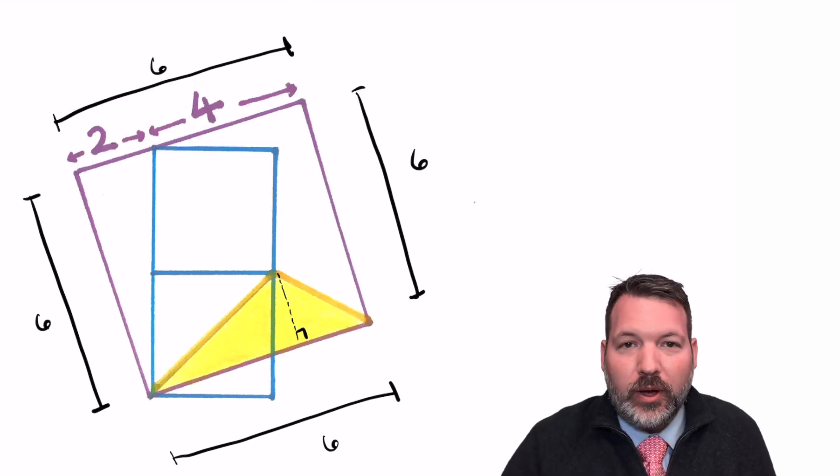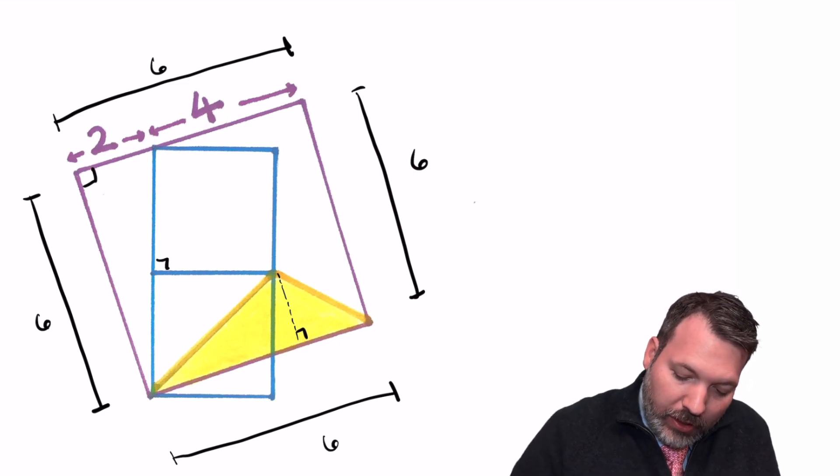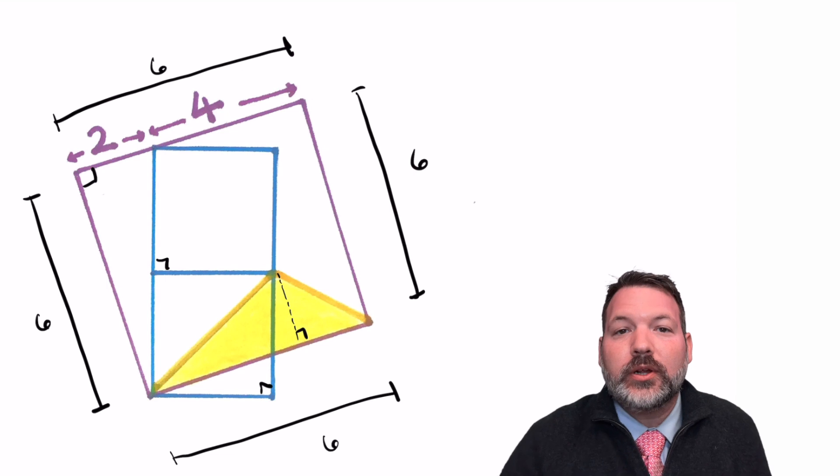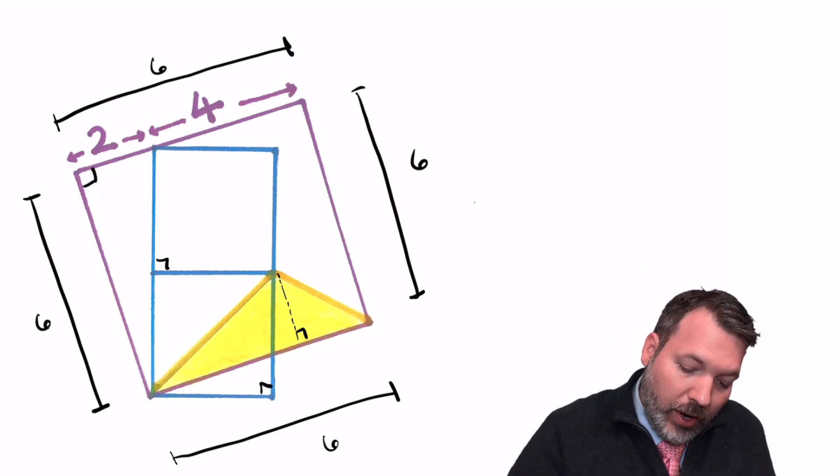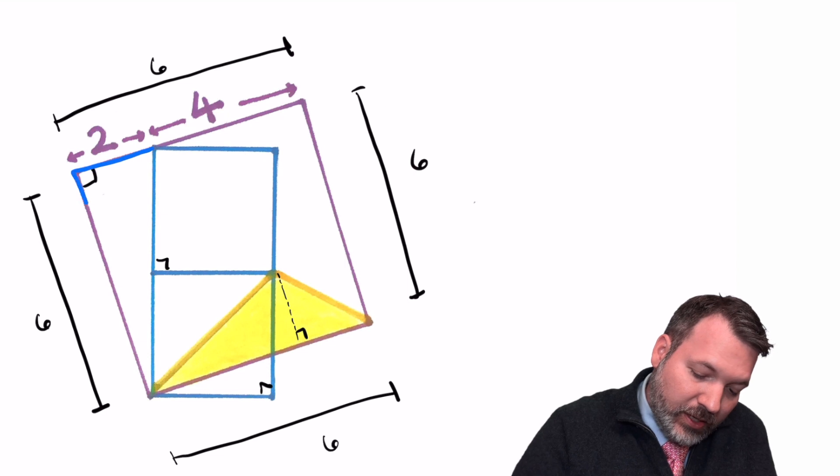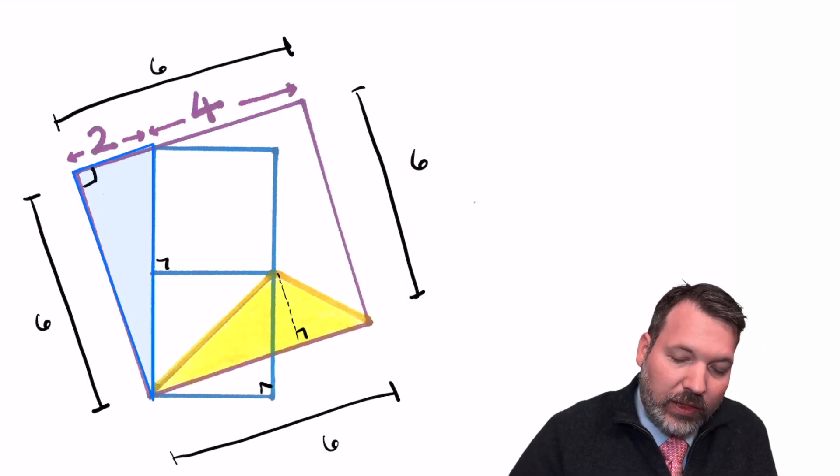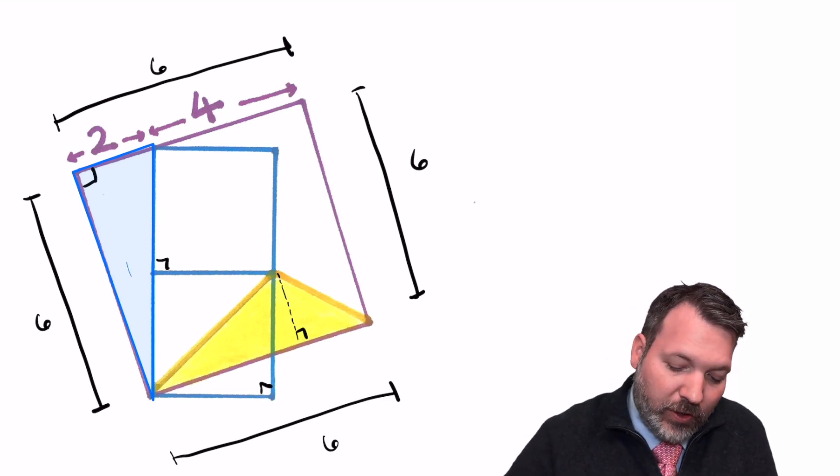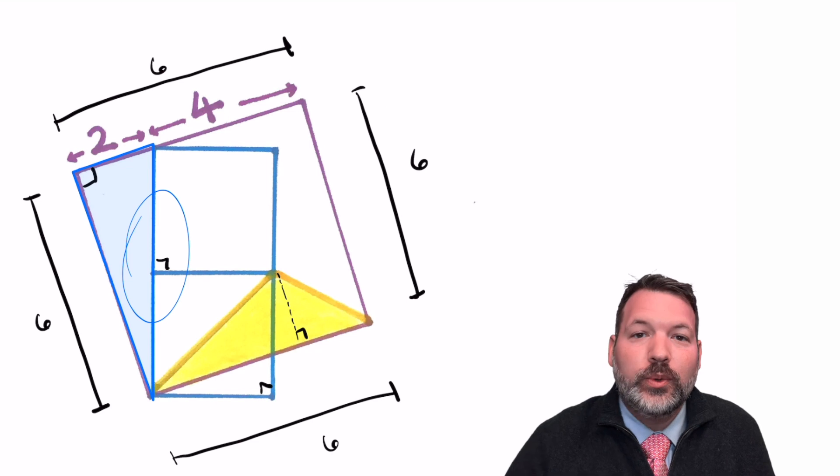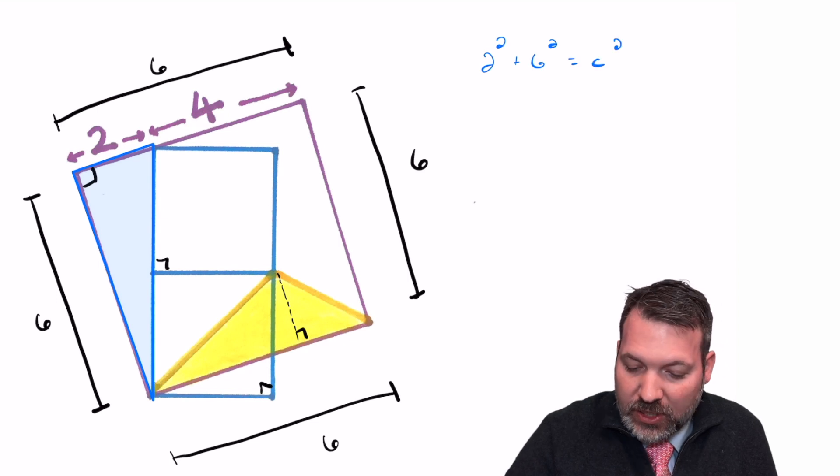Now, some other things we already know is being that these are squares, anywhere that they have corners, we are looking at right angles. And so we should also have a bunch of right triangles in this particular figure. Right off the bat, in fact, we can say this triangle over here is a right triangle with legs of 2 and 4. And so we can use Pythagorean theorem to figure out the length of that hypotenuse, which would also give us the lengths along those two smaller squares. 2 squared plus 6 squared equals c squared,